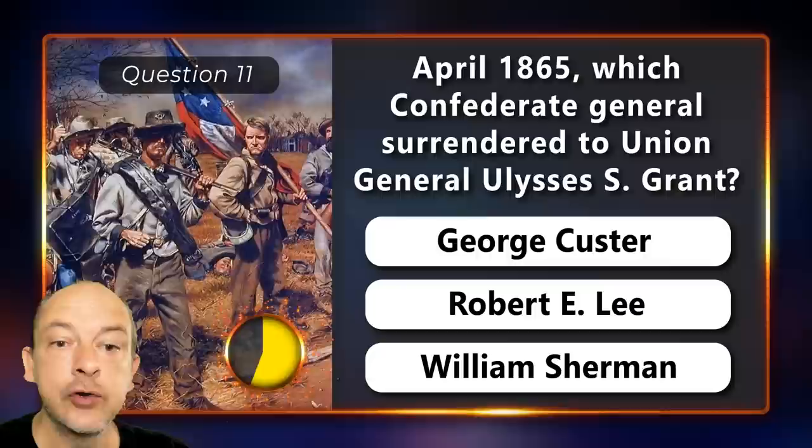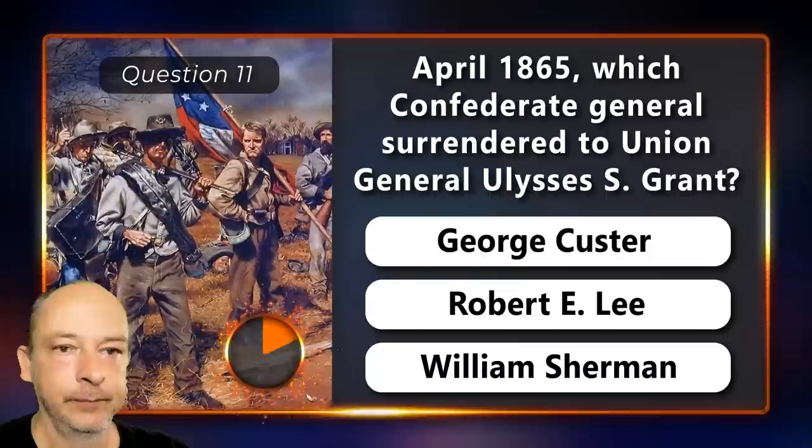April 1865: which Confederate general surrendered to Union General Ulysses S. Grant — Custer, Robert E. Lee, or William Sherman? Robert E. Lee.